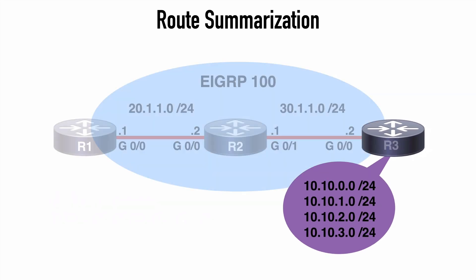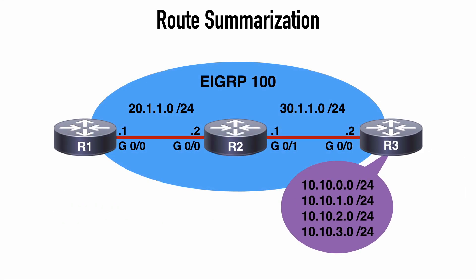First, we'll look at this with EIGRP. Here's the topology that we'll use. You can see we have three routers all within EIGRP Autonomous System 100. R3 has loopback interfaces configured for the four 10.10 networks as we see listed here. These are the same networks that we looked at in our summarization review, so that summary address of 10.10.0.0/22 is going to be valid.